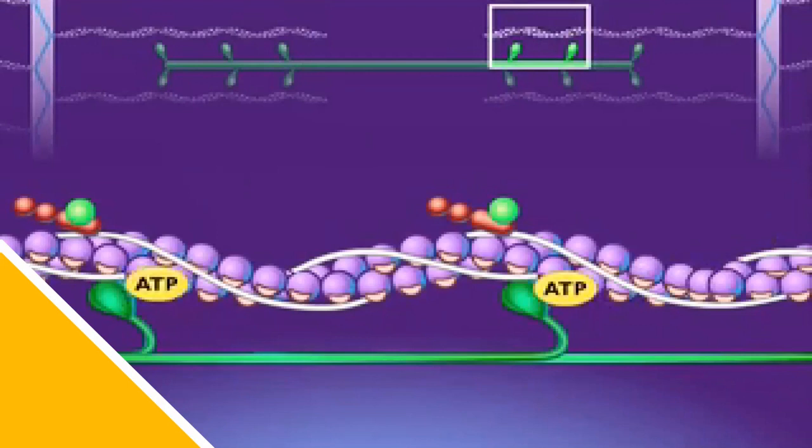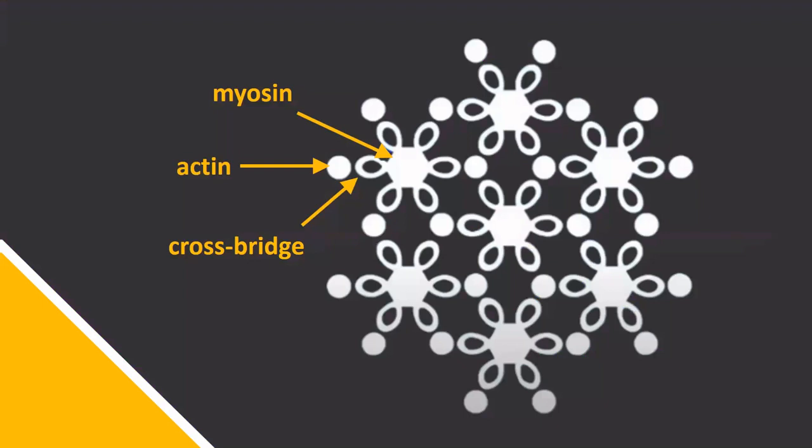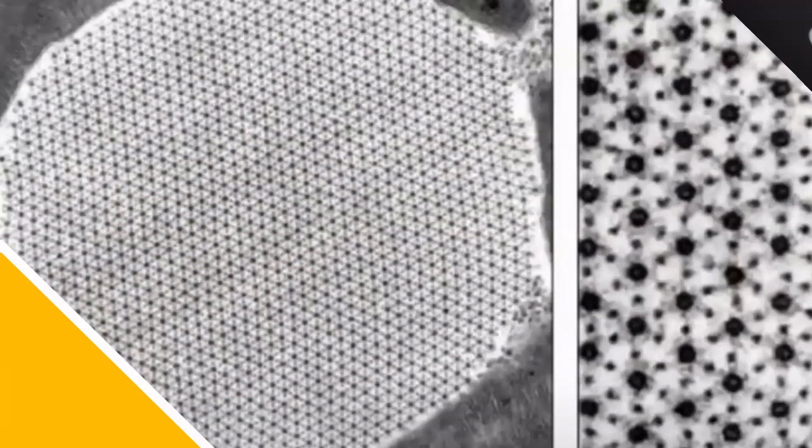If calcium ions are still present, the entire sequence is repeated. In reality, muscles are not two-dimensional. Each myosin filament supplies six actins, and each actin is supplied by crossbridges from three myosin filaments, forming a hexagonal array. A cross section would therefore look something like this.